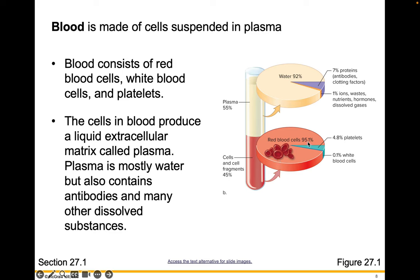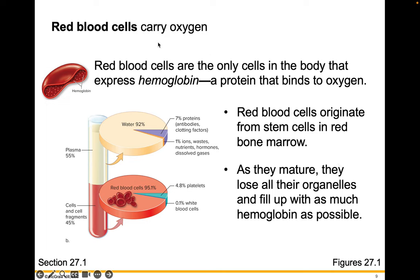The cells themselves are mostly red blood cells, with a little less than 5% platelets and 0.1% white blood cells. Red blood cells carry oxygen — they are the only cells in the body that express hemoglobin, a protein that binds oxygen. Red blood cells originate from stem cells in your red bone marrow. As they mature, they lose all their organelles and fill up with as much hemoglobin as possible.